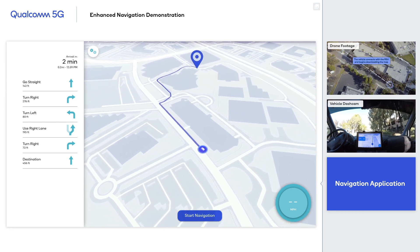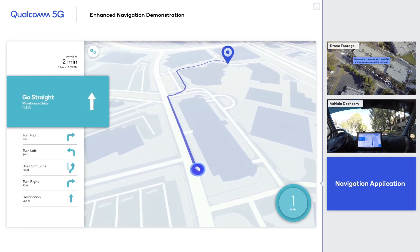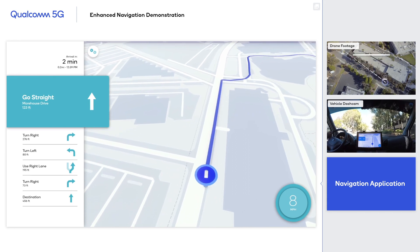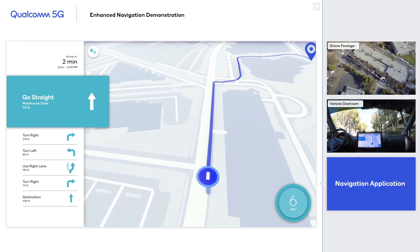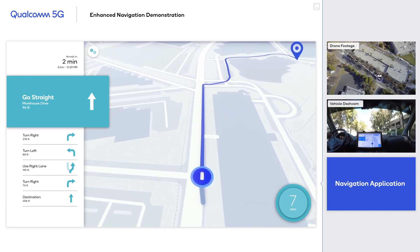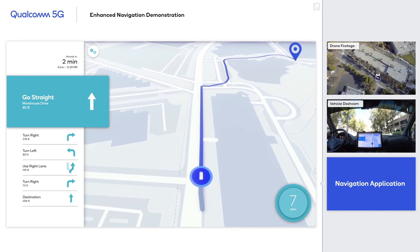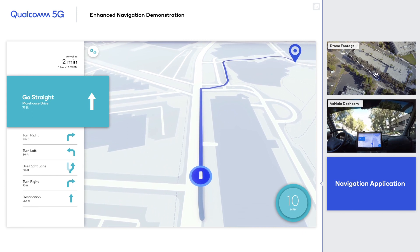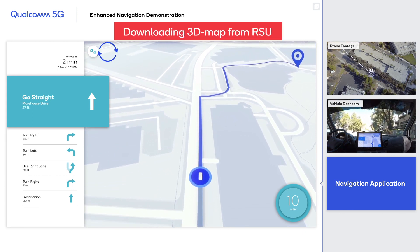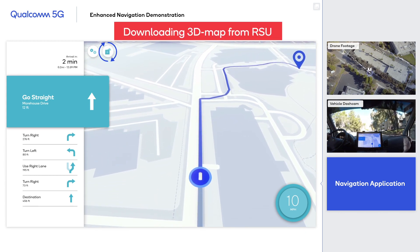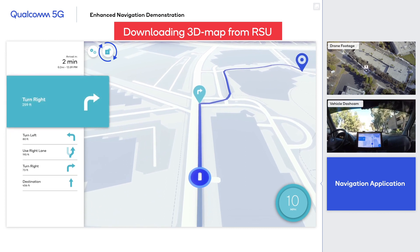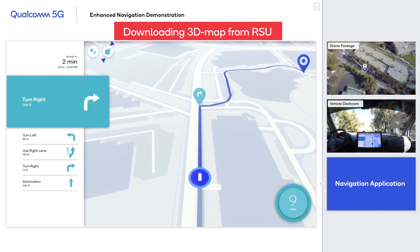As you see, the default mode of operation for the app is a traditional navigation experience with a 2D map and route guidance. At this time, the vehicle has established connection with the RSU using 5G V2X Sidelink, triggering the download of a high-resolution local area 3D map.